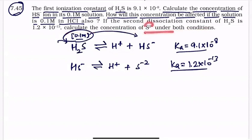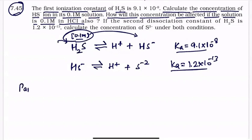They are saying: calculate the concentration of S²⁻ ion under both conditions. So you have the concentration of sulfide ion — if we have a solution in pure water, then if we have a solution in 0.1 molar HCl, then we have a solution in H₂S. So you have 3-4 parts in this question. We will solve all one by one. Part one means you have concentration of HS⁻ ion.